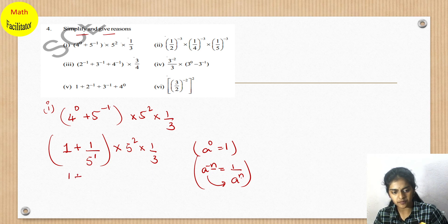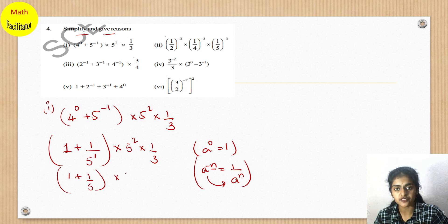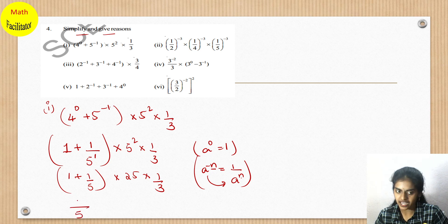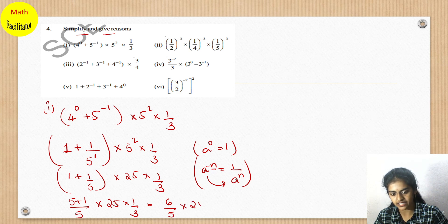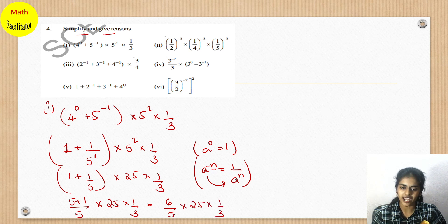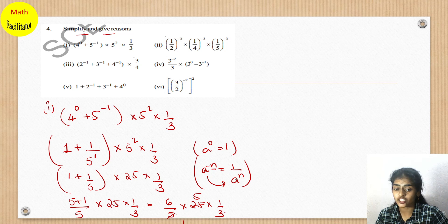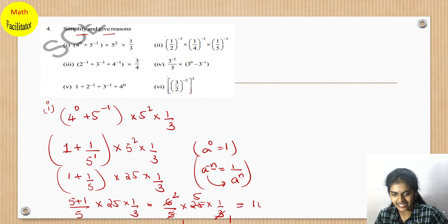Take LCM. So this is 1 plus 1 by 5, and 5 squared is 25, into 1 by 3. Taking LCM, which is 5, you have 5 plus 1 into 25 into 1 by 3. So 5 plus 1 is 6, multiplied by 5 into 25 into 1 by 3. Now 5 is in the denominator and 25 is in the numerator — 5 fives are 25, so they cancel. 3 is in the denominator and 6 is in the numerator — 3 twos are 6, so they cancel. You are left with 5 twos are 10. So the final answer is 10.